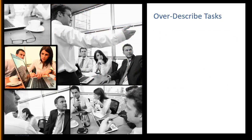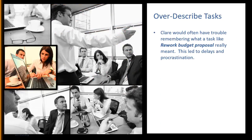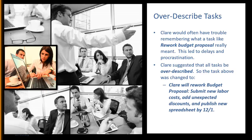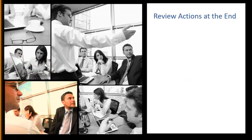Claire had a really big challenge. Sometimes she would get a task on the team action list that would say 'rework budget proposal,' but she couldn't remember exactly what she had committed to — exactly what those steps were. So Claire suggested that for all tasks, let's over-describe each action item. The task above was changed to something much more clear as to what exactly needed to be done, and this helped avoid a lot of confusion. The whole team did better.